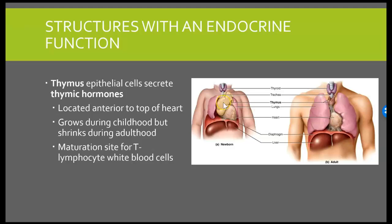The thymus is really going to be large in childhood because it's going to secrete thymic hormones like thymocin, for example — that's the big one. And that is going to help maturation of T lymphocytes, our white blood cells, so that we can really develop our immune system. As we get older, that's not so much of a concern, and that's why this organ tends to shrink.